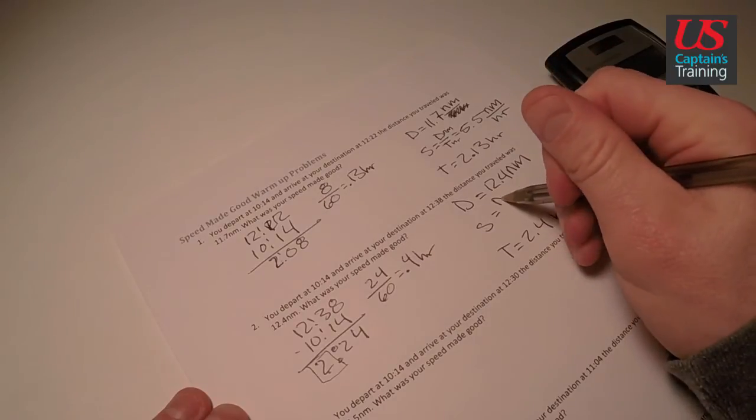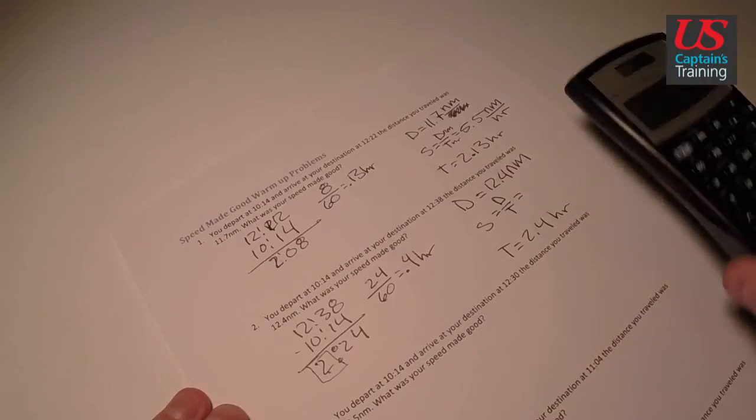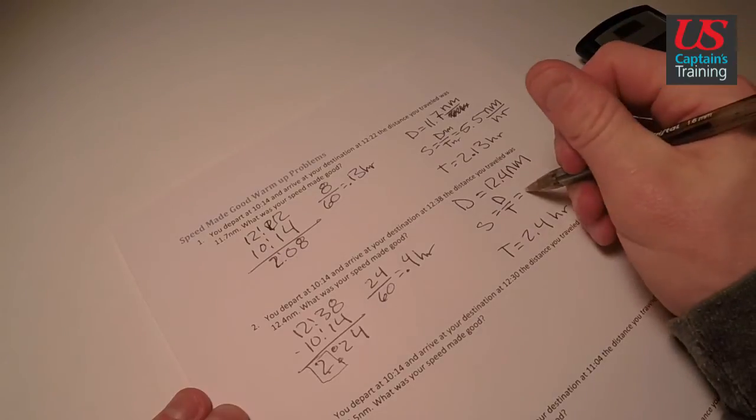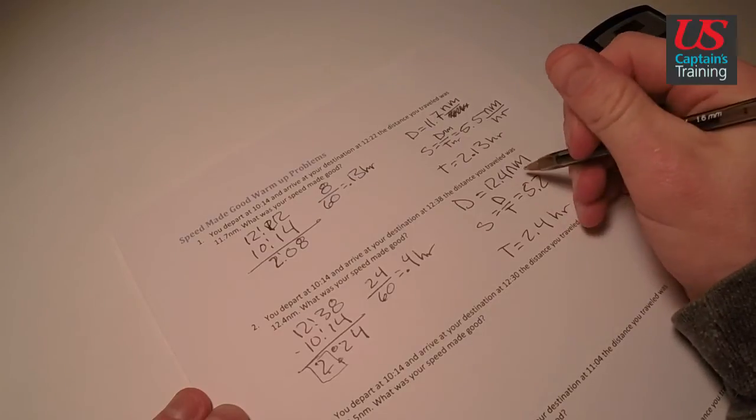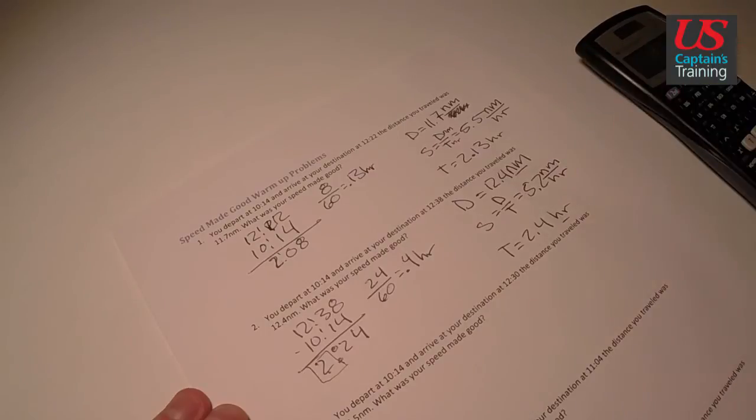Speed is equal to distance divided by time. So we get 12.4 divided by 2.4, we get 5.16 repeating. Anytime it's 5 or greater, we round up. So 5.16 rounds to 5.2. 5.2 nautical miles per hour.